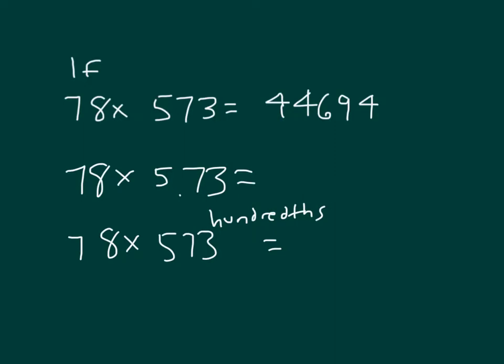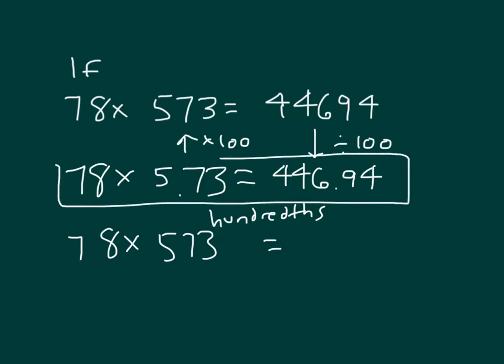So to get back over to our answer here, we end up dividing by 100. And then dividing by 100, 44,694 dividing it by 100, we can place the decimal point there so that 78 times 5.73 equals 446.94.